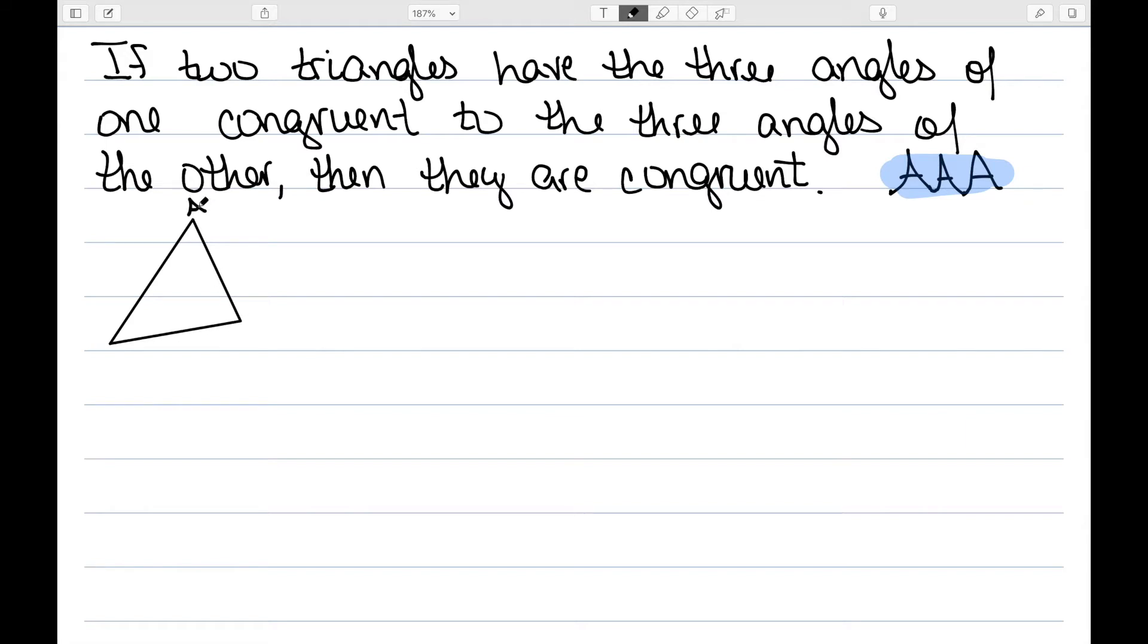So here I have triangle ABC. And then down here I have XYZ. And we know their angles are congruent. So angle A is congruent to angle X, B is congruent to Y, and C is congruent to Z.